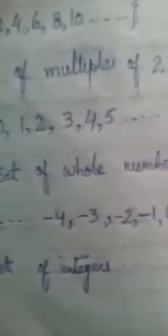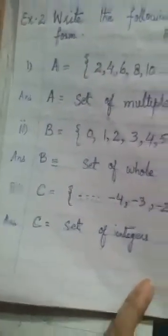C = {-4, -3, -2, -1, 0, 1, 2, 3, 4}. Answer: C is a set of integers.